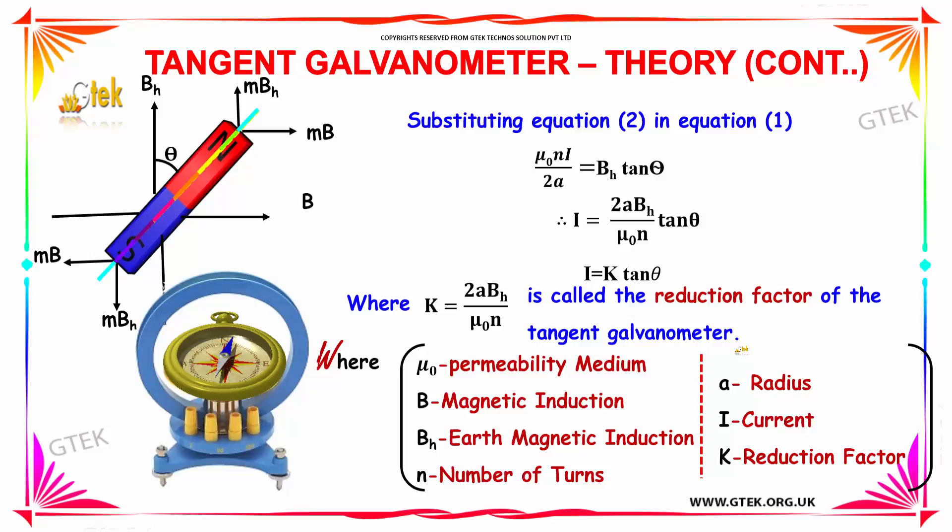Substituting both equations, you get μ₀NI/2A equals BH tan theta. So I equals 2A·BH·tan theta divided by μ₀N.